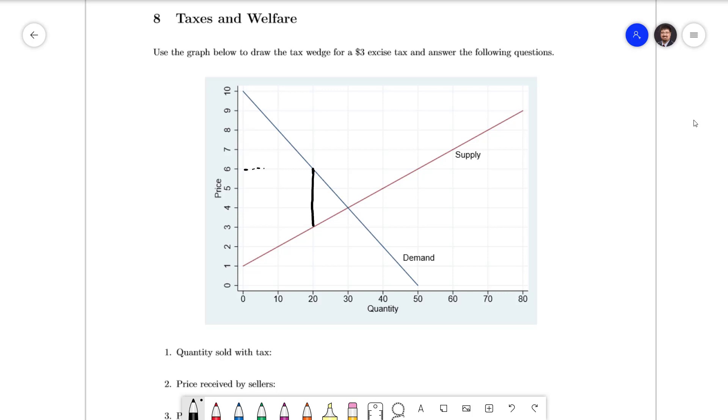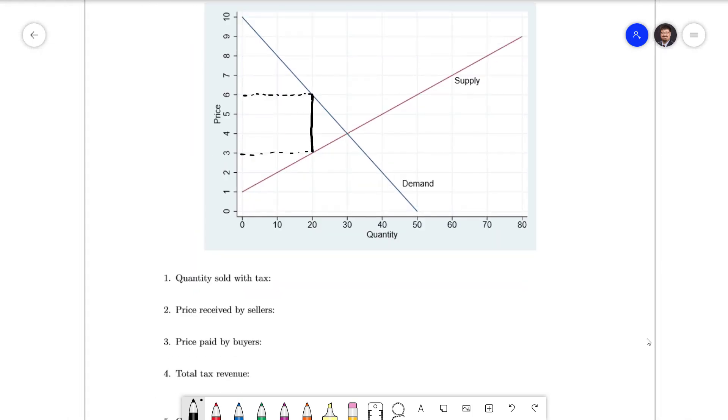Looking at the points where our tax wedge sits we have 6 and 3 which are 3 apart. This will be the information we need to answer the first 3 questions. Quantity sold with the tax is 20. Price received by sellers is 3. Price paid by buyers is 6.